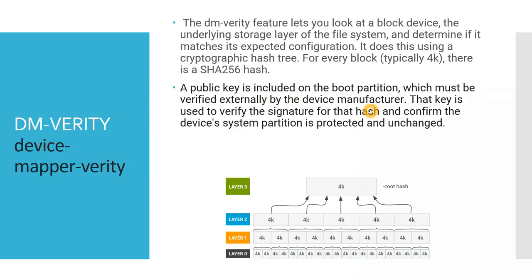A public key is included on the boot partition, which must be verified externally by the device manufacturer. As a device manufacturer, you define a particular public key and include it in the boot partition in the Android build code. That key is used to verify the signature for the hash and confirm the device's system partition is protected and unchanged. At every step of the Android booting process — loading the system image, kernel, boot image — a check is made using a hash tree that includes all related secure keys using SHA-256 hash algorithm.